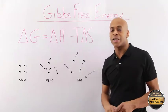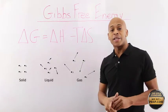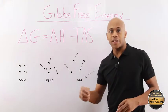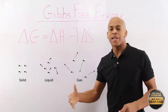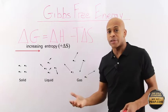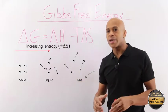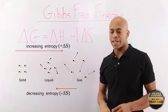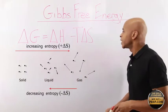Delta S is the entropy. When entropy increases, meaning you have more randomness, then delta S is positive. And when entropy is decreasing, meaning something is getting more ordered, then delta S is negative.